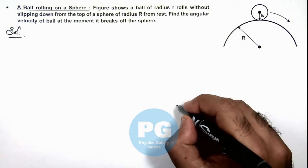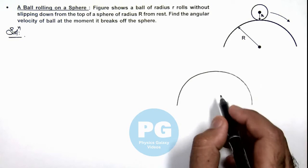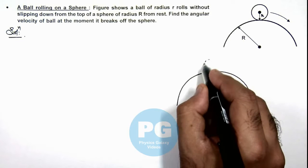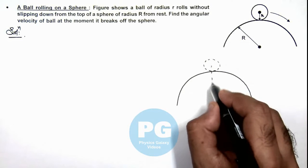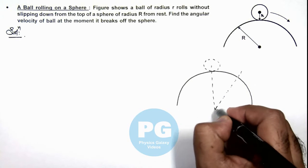We can again draw the figure for analysis and better clarity. This was the initial position of the ball, and from the initial position if it reaches an angle theta.